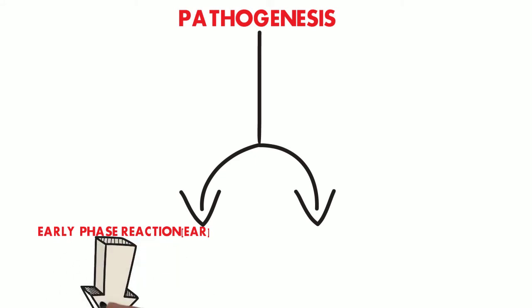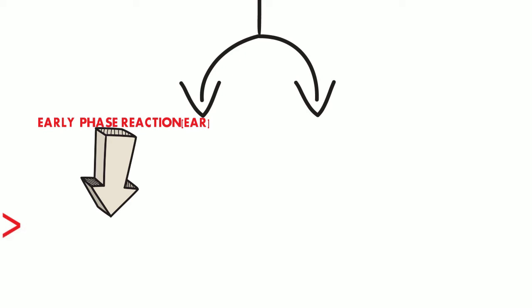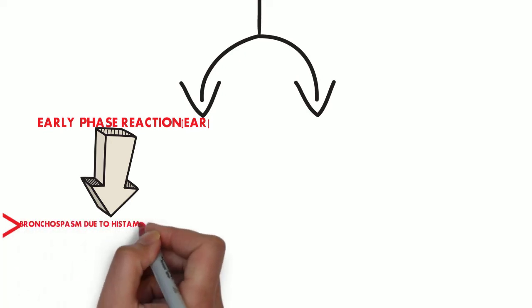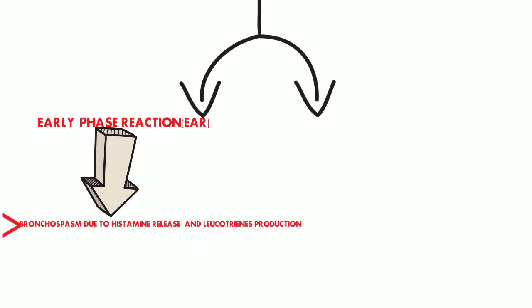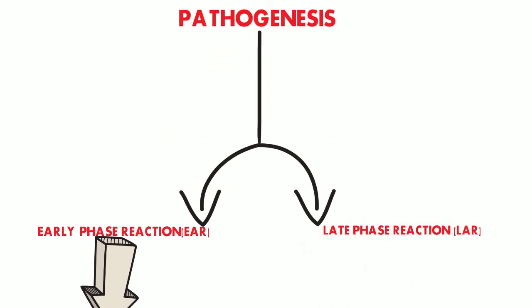The early asthmatic reaction involves the release of histamine from the mast cell, which leads to bronchoconstriction. The mast cells contain histamine and have IgE antibodies over their surface. Whenever the external allergen comes, it leads to the cross-linking of the IgE molecules, and as a result the degranulation of the mast cells takes place, releasing histamine. Histamine is a potent bronchoconstrictor which leads to bronchoconstriction.